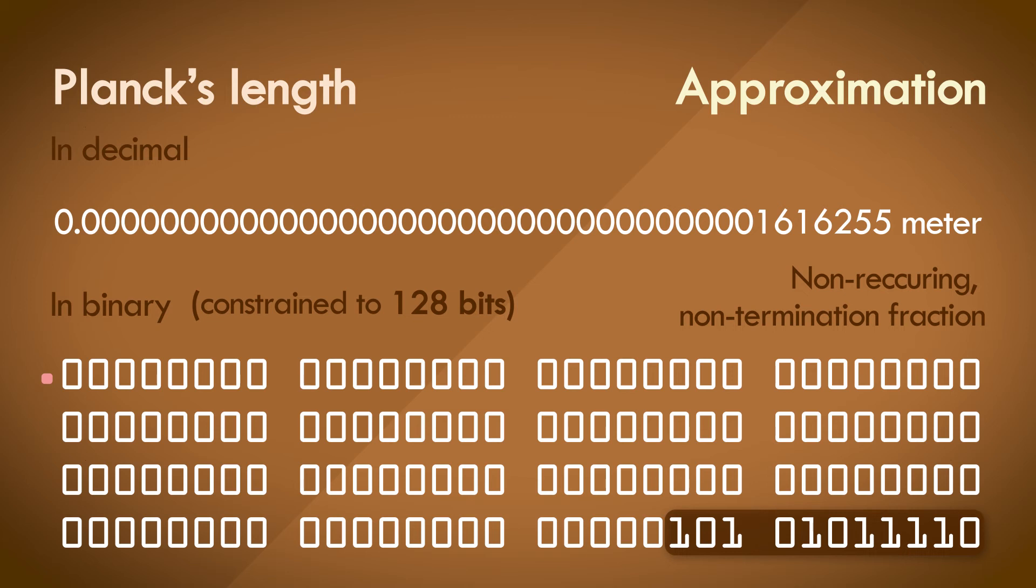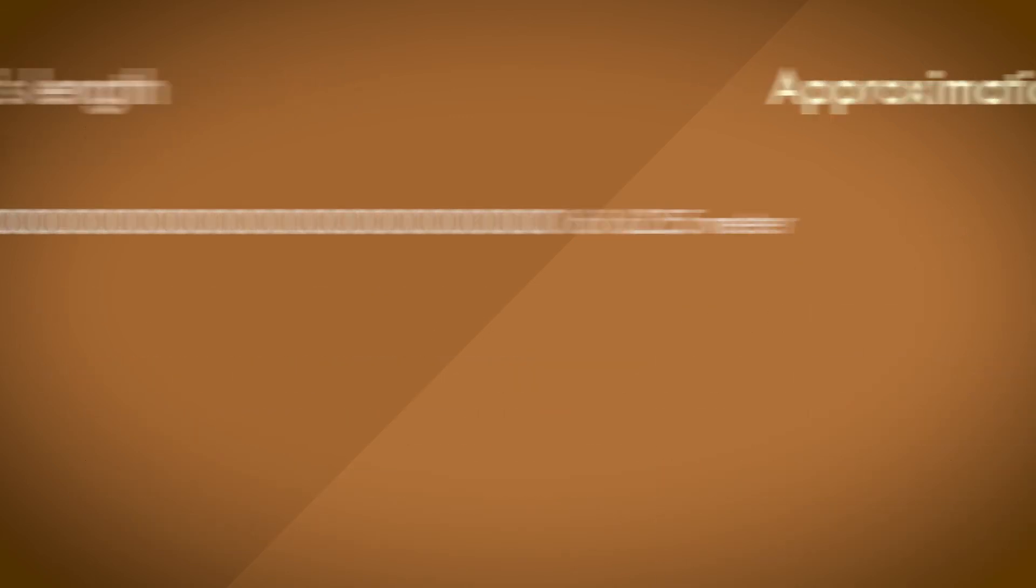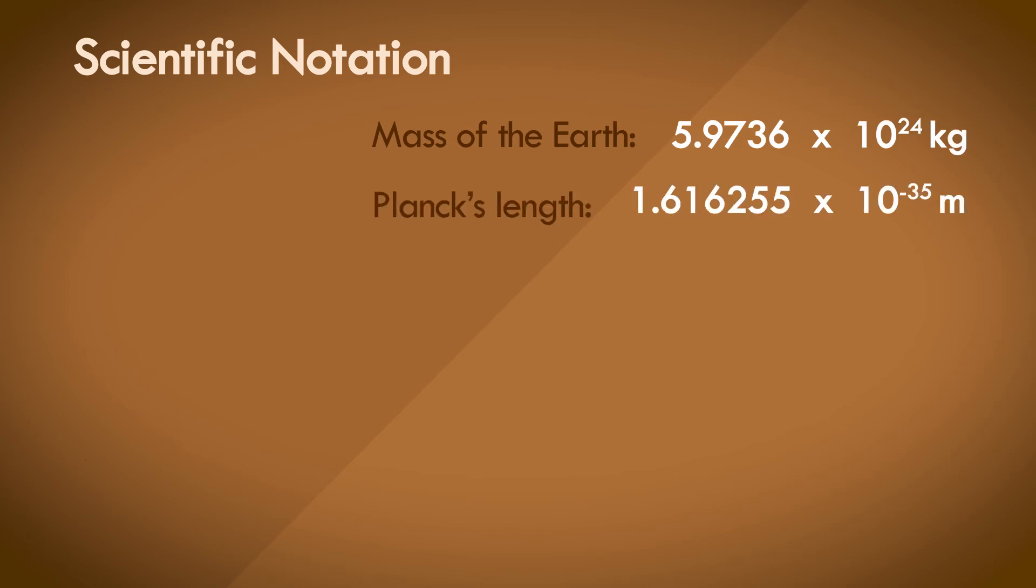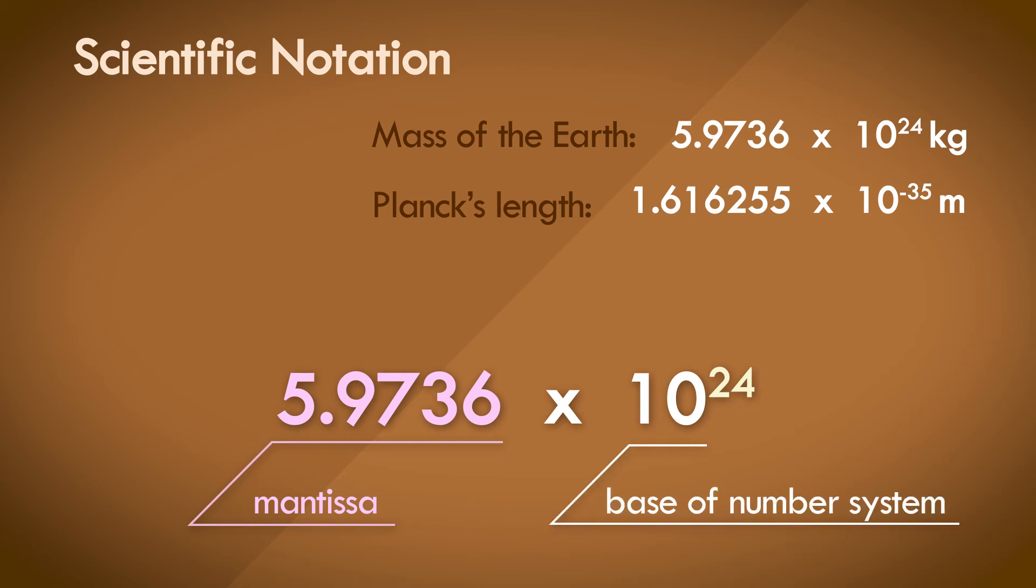How do scientists deal with these numbers? Well, they use the scientific notation. I'm sure you've seen this representation before, and it's very convenient. You can represent any arbitrary decimal number in scientific notation with two parts: a real number called the mantissa, multiplied by the base of the number system to the power of an exponent.